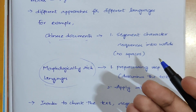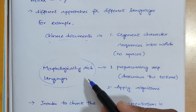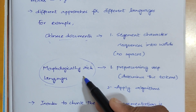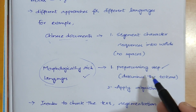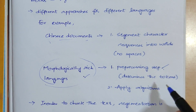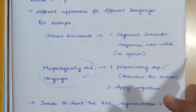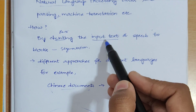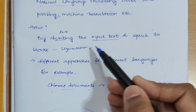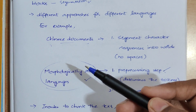Then we come to morphologically rich languages — languages which have more morphemes. Finding the structure of documents in these languages might be different. They may follow a pre-processing step first, determining the tokens and then applying different algorithms to find the structure of the documents. So segmentation, which is the same as chunking, is done in order to find the structure of documents.